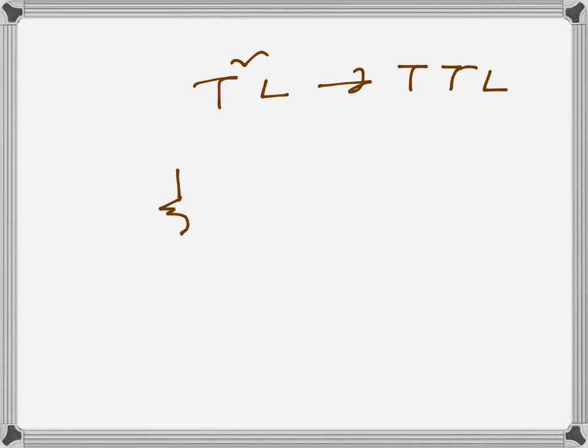So let's say we have a BJT here, an NPN transistor. This is our collector, this is base, and this is emitter. Now this can act as a switch. This is R1.